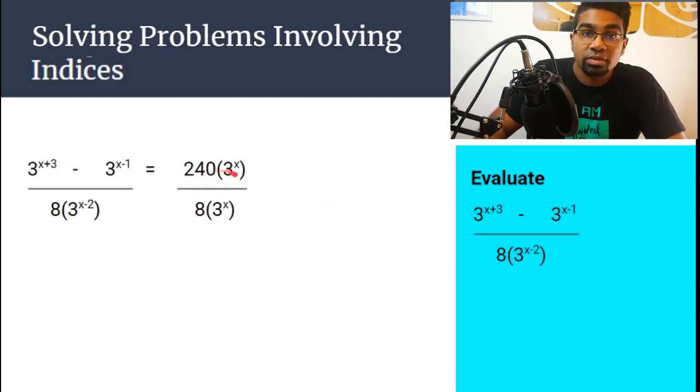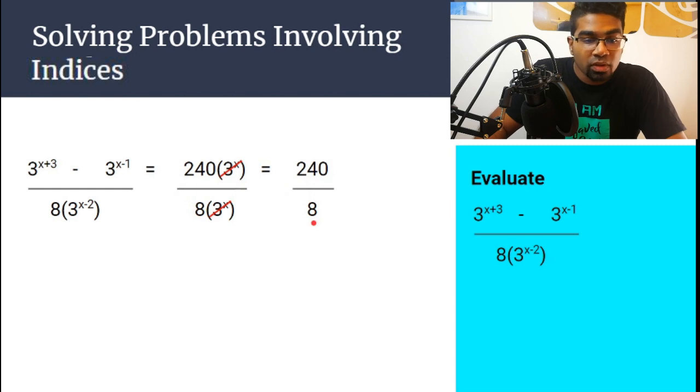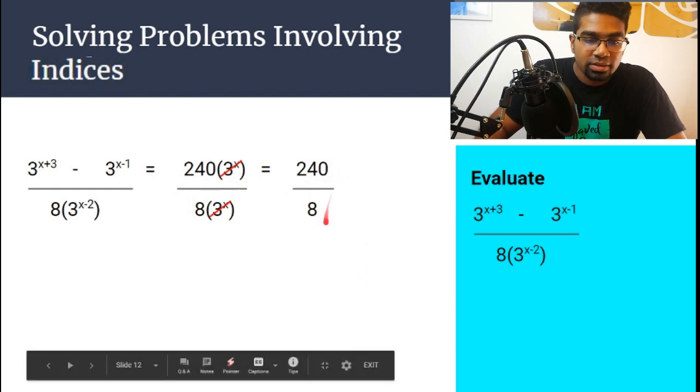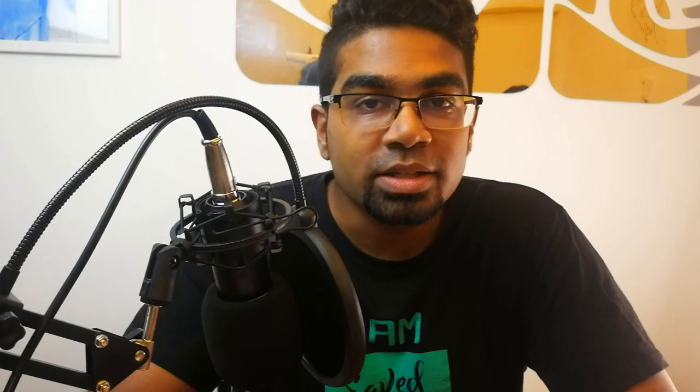So here, 240 apples over 8 apples. Then what to do? Both numerator and denominator, we can divide by 3 to the power of x. So we can eliminate 3 to the power of x. We get 240 divided by 8. And then 240 divided by 8 is, of course, 30. So the answer here is 30.